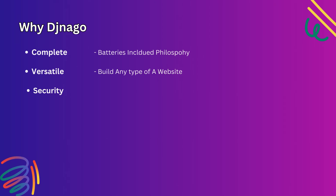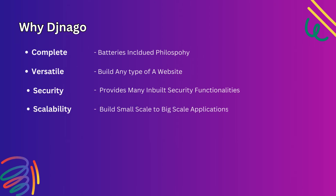Regarding security, Django gives us basic security functionalities like user authentication, login, logout, sessions, and cookies. Django helps developers avoid many common security mistakes by providing a framework engineered to protect the website automatically. Django runs on the MVT architecture — Model View Template architecture. And for scalability, Django allows you to develop both small websites and large-scale websites. Because Django uses a component-based, shared-nothing architecture, each part is independent of the others and can be replaced or changed if needed.